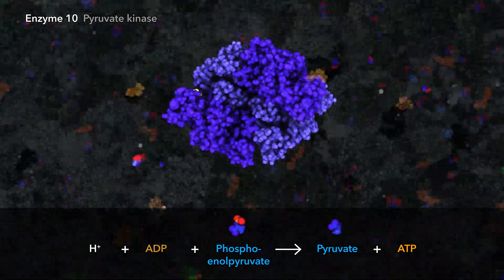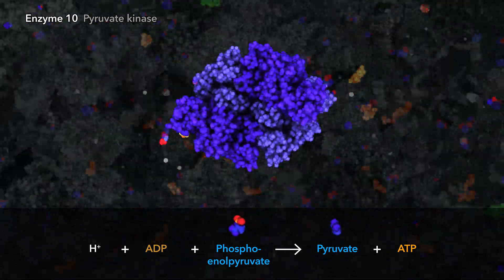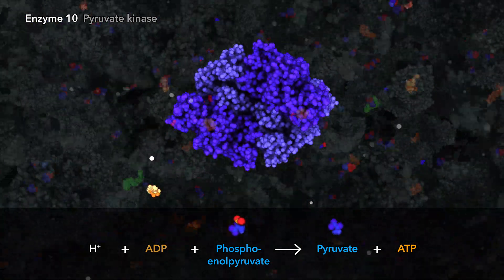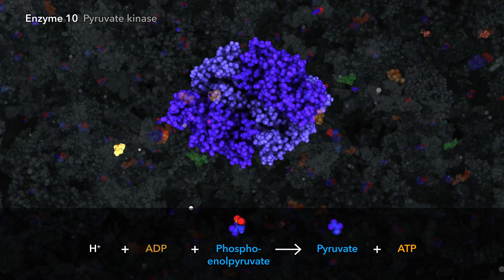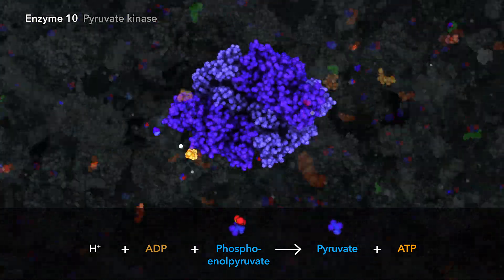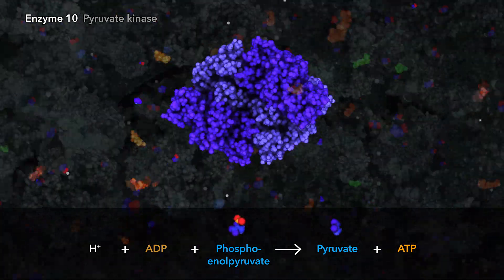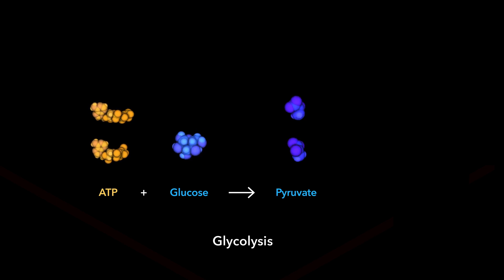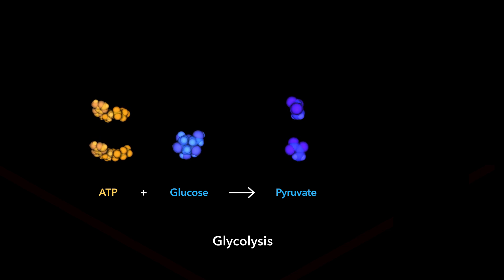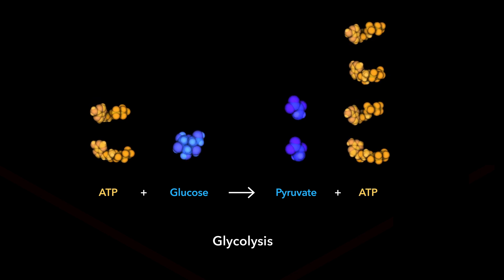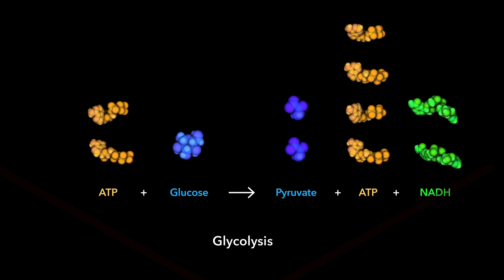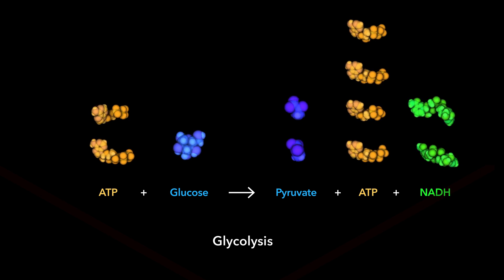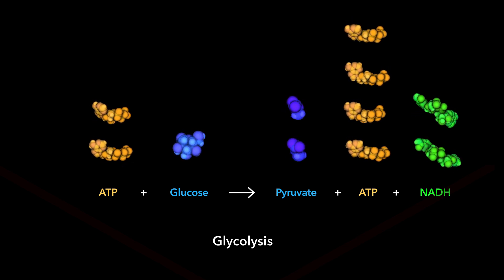Glycolysis finally produces a net gain in ATP. The glycolysis pathway breaks down glucose into two molecules of pyruvate, gaining 2 ATP and 2 NADH in the process.